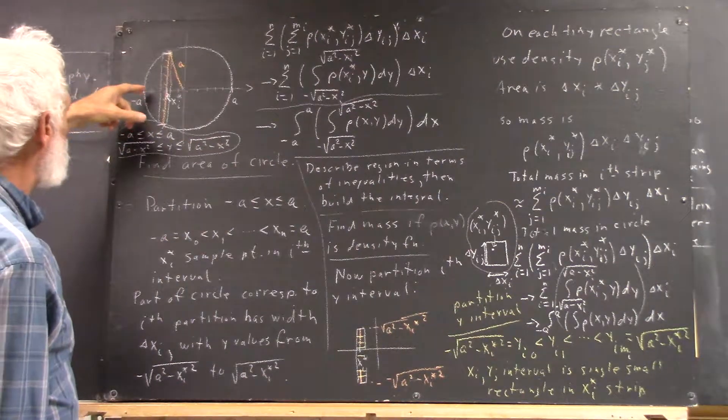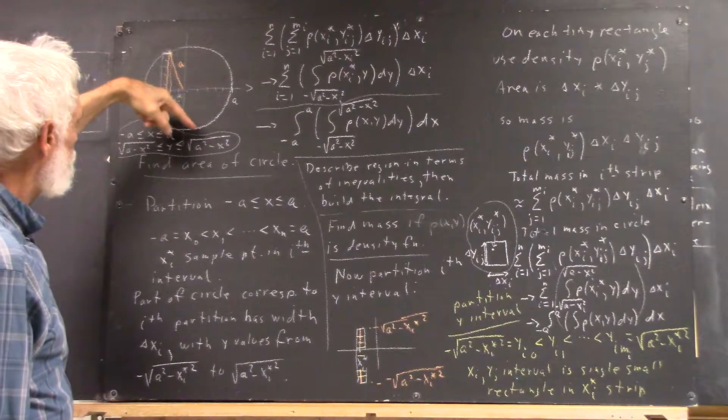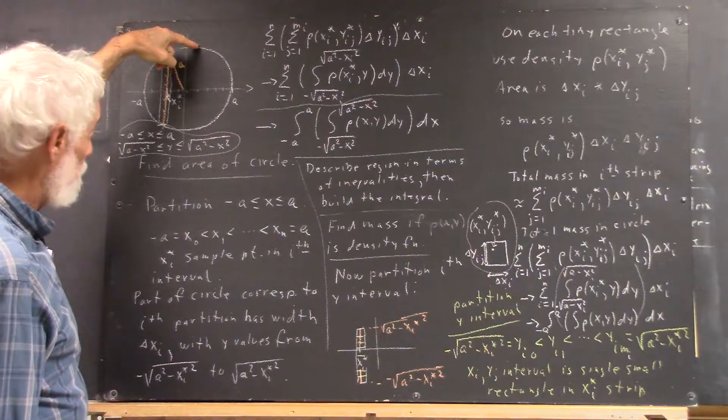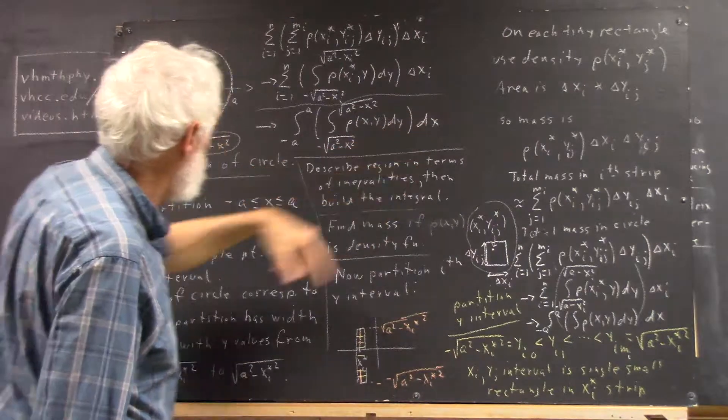So x can go from negative a to a, and for any value of x, y goes from negative square root of a squared minus x squared to positive square root of a squared minus x squared. This description gives us the limits on our integral.